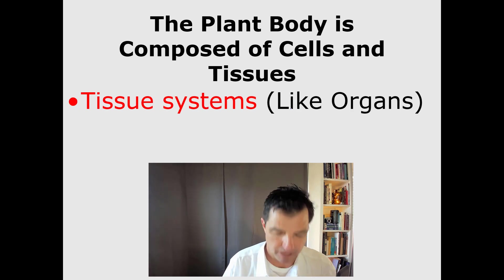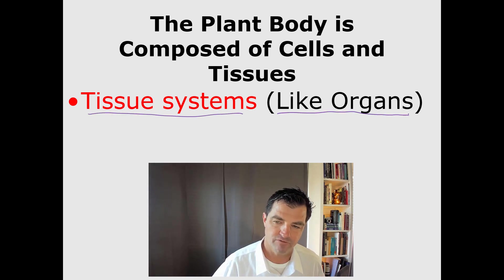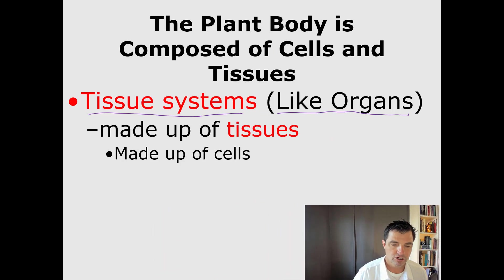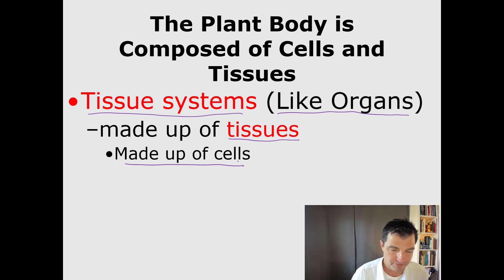When we talk about plants, plants have what are called tissue systems. Tissue systems are kind of the equivalent of organs in us, and they are made up of tissues. A tissue is a group of cells that works together to perform some kind of function. Usually those cells are separated by membranes or some other type of surface, but essentially they work together to perform a particular task.